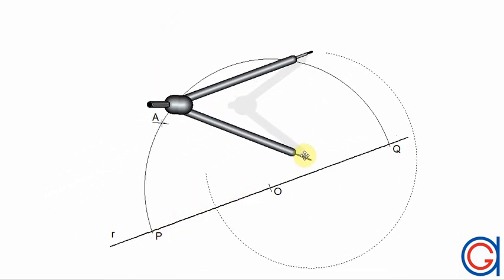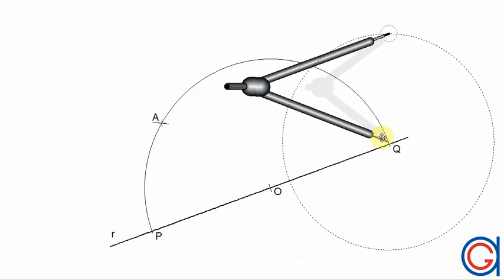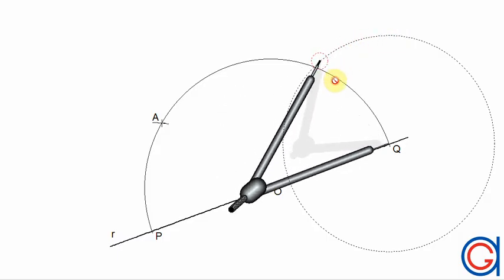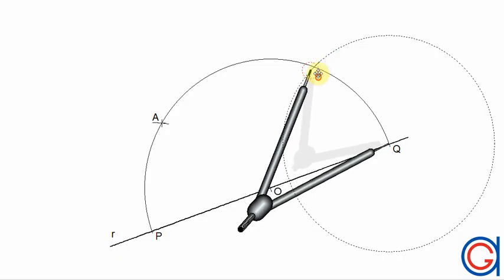The next step is to transport the same length PA to the other side. Now with our compass set on point Q and length PA, we scribe another arc which cuts our semicircle at point B, as can be seen here in the video.